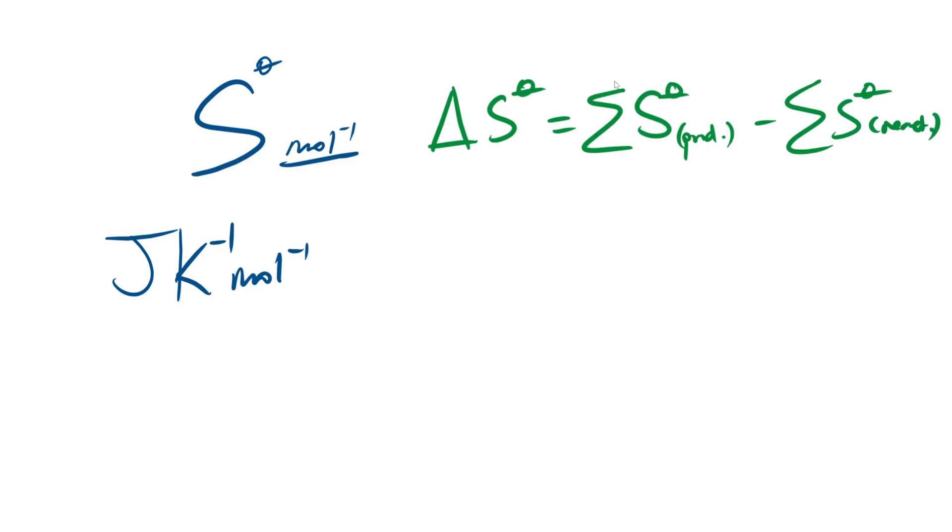All right, easy equation to learn and shouldn't be too complicated. You're normally given an equation, a plus b gives c plus d for example, and then we're given some data values for the entropies. You add them all together for the products, add them all together for the reactants, and minus the reactants from the products, easy as that.